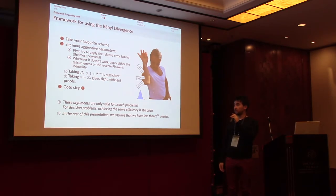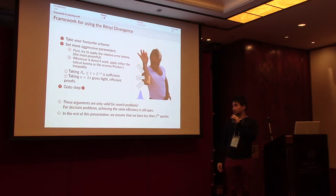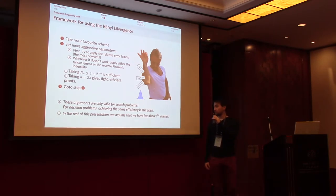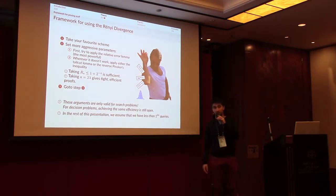Something to keep in mind is that these arguments are valid only for search problems, and for decision problems it is still an open question to achieve the same efficiency. In the rest of this presentation, I will often give numbers assuming fewer than 2^64 queries, as per the NIST call for proposals.